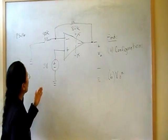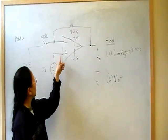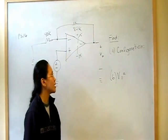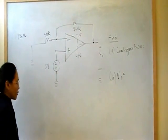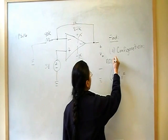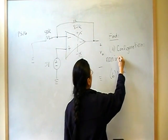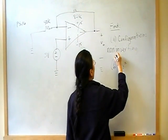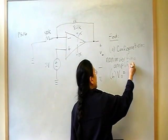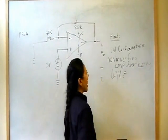It's going in through here, through the positive terminal, so it's going to come out positive also. So, the configuration is the non-inverting amplifier configuration. That's part A.